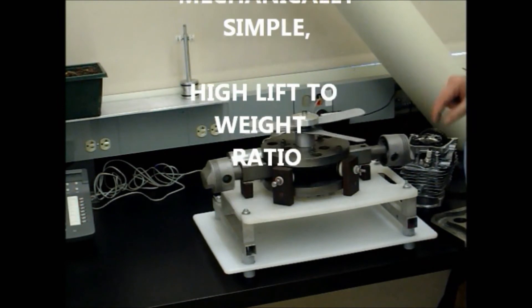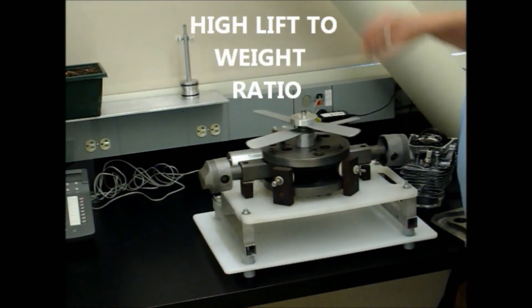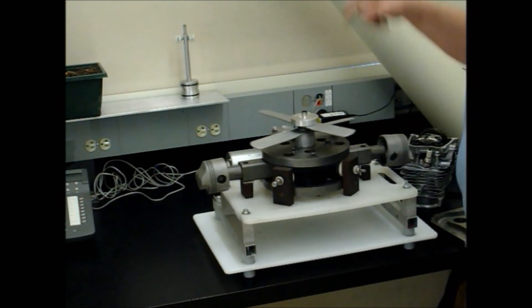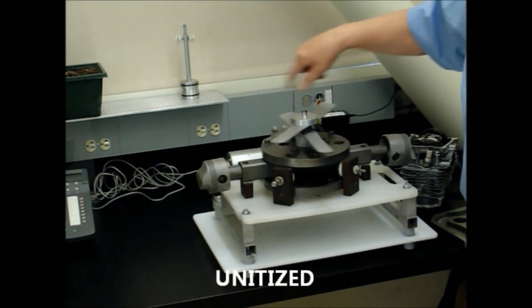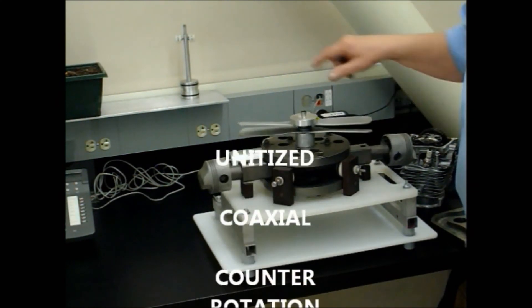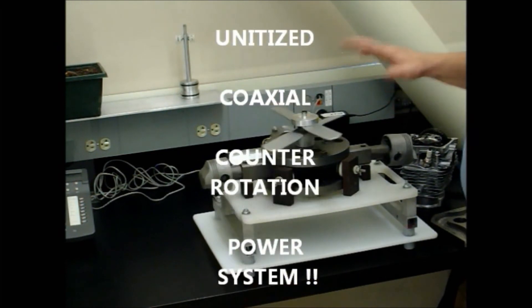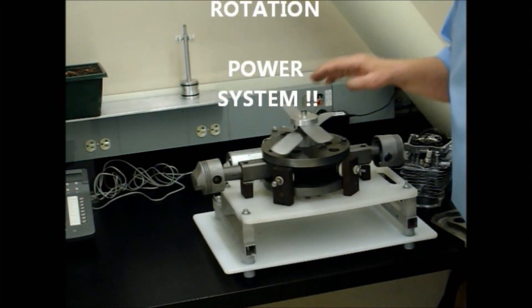Three of the features: unitized including transmission, and including coaxial counter-rotation, which gives you the three primary features of the power system. Thank you.